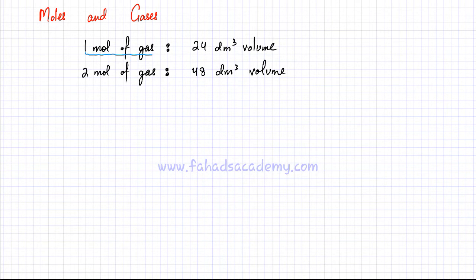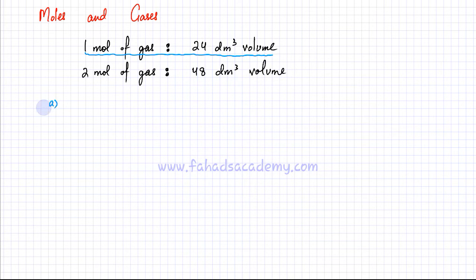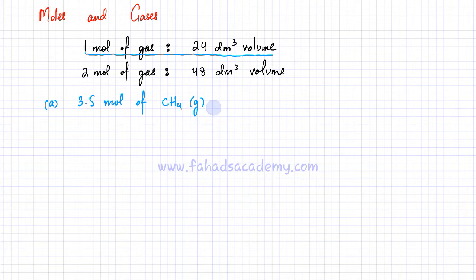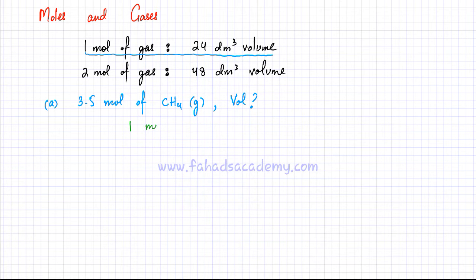You can use ratios by just remembering that one mole of gas occupies 24 dm³. Let's do a question: I have 3.5 moles of CH₄ gas and I need to find out the volume that this gas would occupy. I can use ratios — I know that one mole of gas occupies 24 dm³.